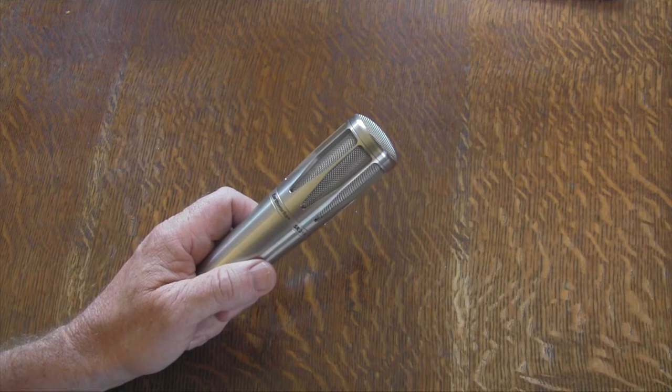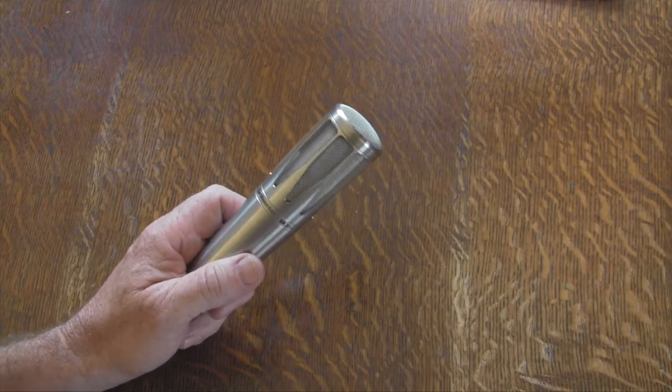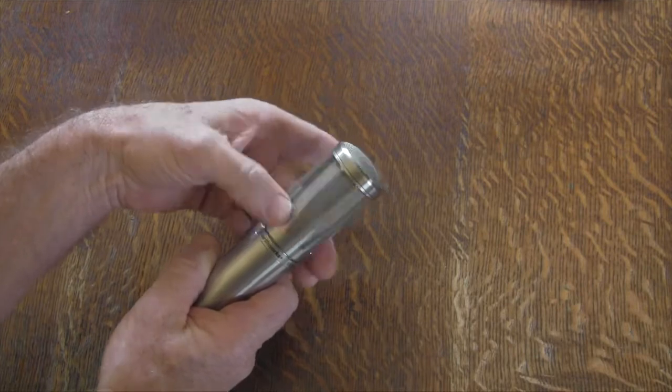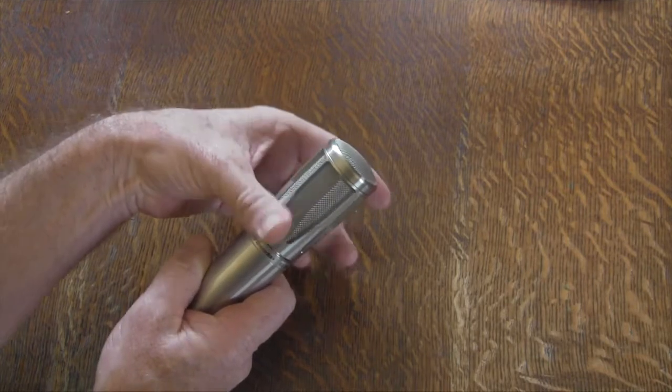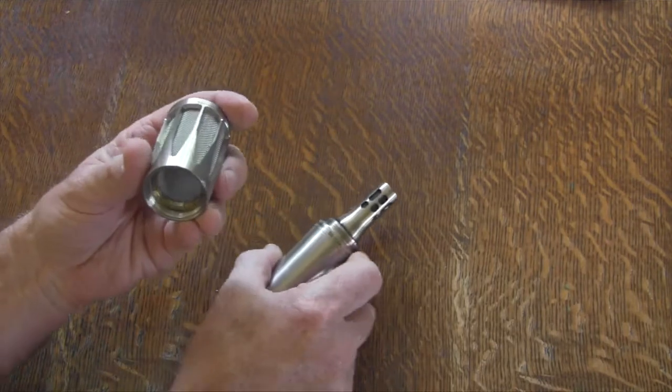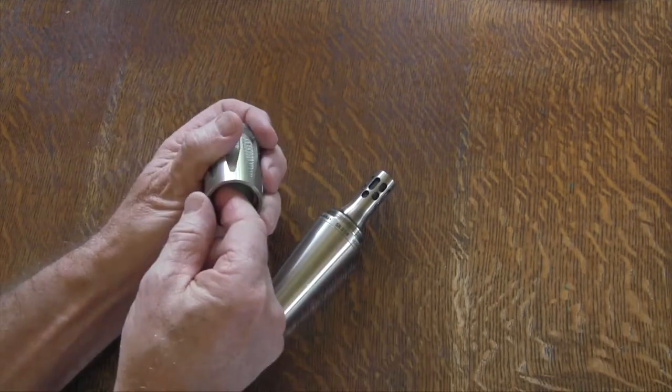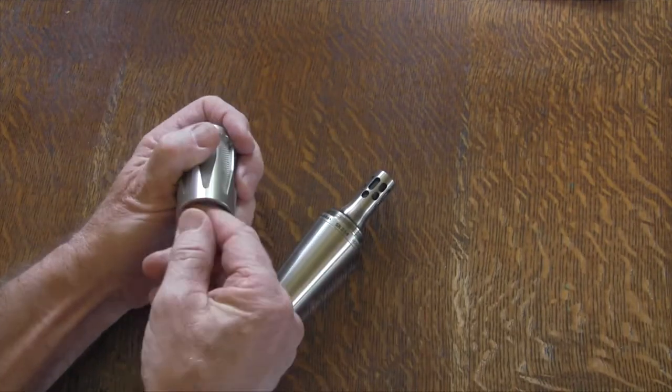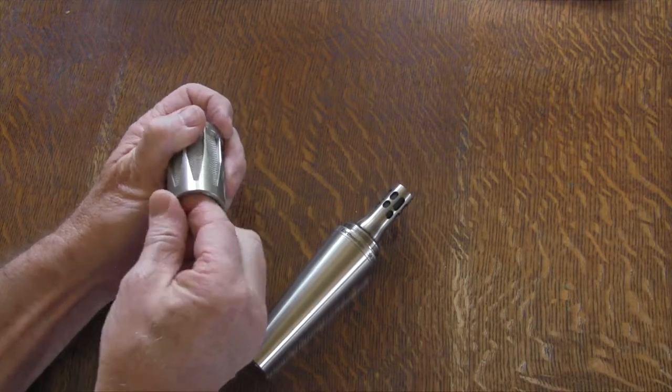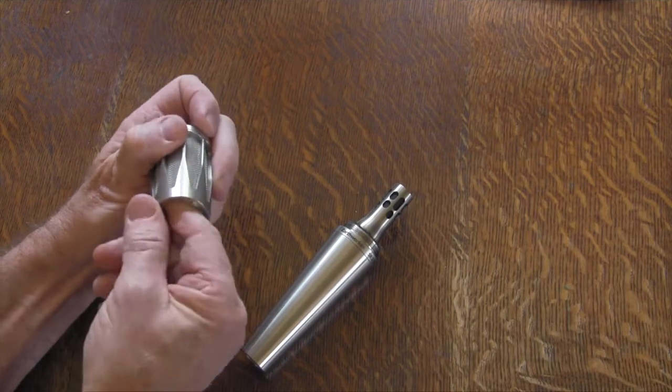So I started looking for a way to modify this. Now if we take it apart, we will see that it's got two layers of protection from the factory. This thing's kind of hard to get out here. See if we can get this thing out.